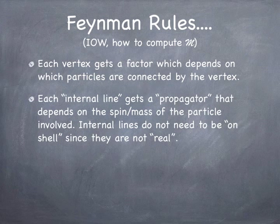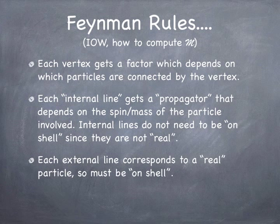In addition to vertex factors, each internal line gets a propagator, and propagators also depend on spin and mass. The internal lines don't need to be on the mass shell — the energy squared doesn't have to equal momentum squared plus mass squared. These internal particles are never actually measured; they're used as part of the calculation and you integrate over all possible momenta that could happen. They're called virtual particles — they're not real, so they don't have to behave like real particles. But external lines that come in and leave the diagram correspond to real particles you could measure in the laboratory, and they are constrained to lie on the mass shell.